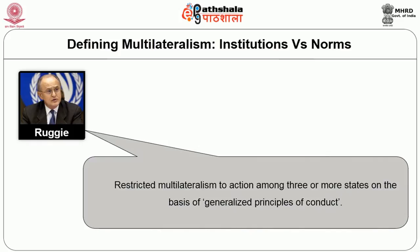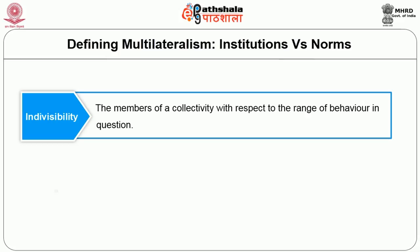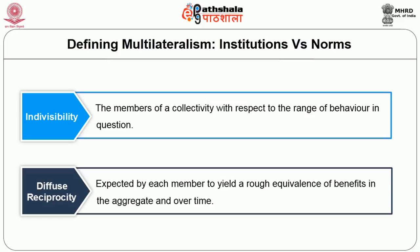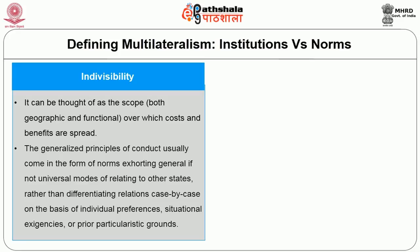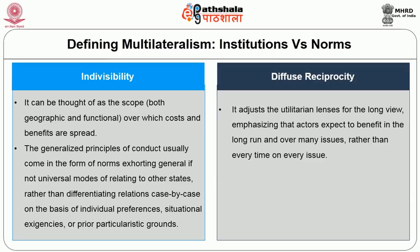Ruggie's alternative definition restricted multilateralism to action among three or more states on the basis of generalized principles of conduct. Two corollaries of generalized principles of conduct were indivisibility among the members of a collective with respect to the range of behaviour in question, and diffuse reciprocity expected by each member to yield a rough equivalence of benefits in the aggregate and over time. Indivisibility can be thought of as a scope — both geographic and functional — over which costs and benefits are spread. The generalized principles of conduct usually come in the form of norms, exhorting general if not universal modes of relating to other states. Diffuse reciprocity adjusts the utilitarian lens for the long view, emphasizing that actors expect to benefit in the long run and over many issues rather than every time on every issue.